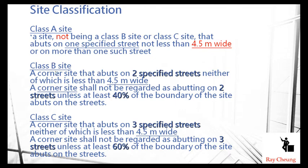For Class B, you need to make sure this is a corner site with at least two streets, each at least 4.5 meters wide, and you also need to ensure that at least 40% of the boundary of the site abuts the street. For Class C, you need at least three streets with more than 4.5 meters wide and the percentage is more than 60%.